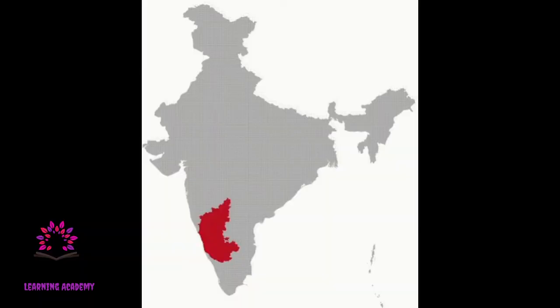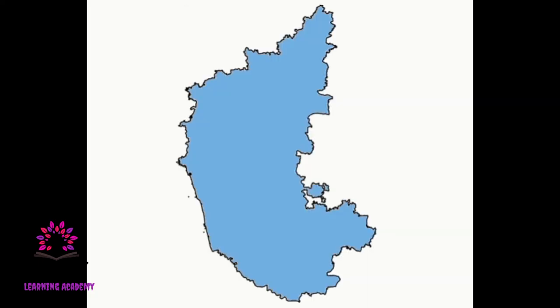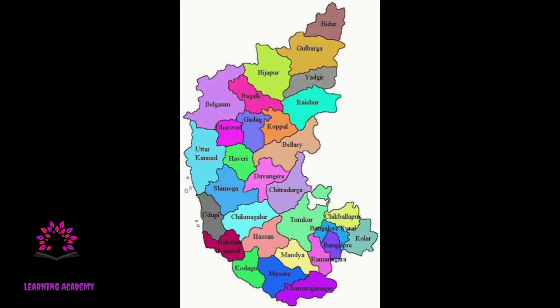Dear children, our state has been recognized as an important state in the country by its various characteristics. We must be proud of our rich and beautiful state. The natural landscape of Karnataka adds beauty to the tourist spots. Karnataka is also called the City of Gardens because of its lush green patches and colorful blossoms all over the state. It's our duty to know the history of our state and its famous natural resources, and let's develop an attitude towards protecting them.